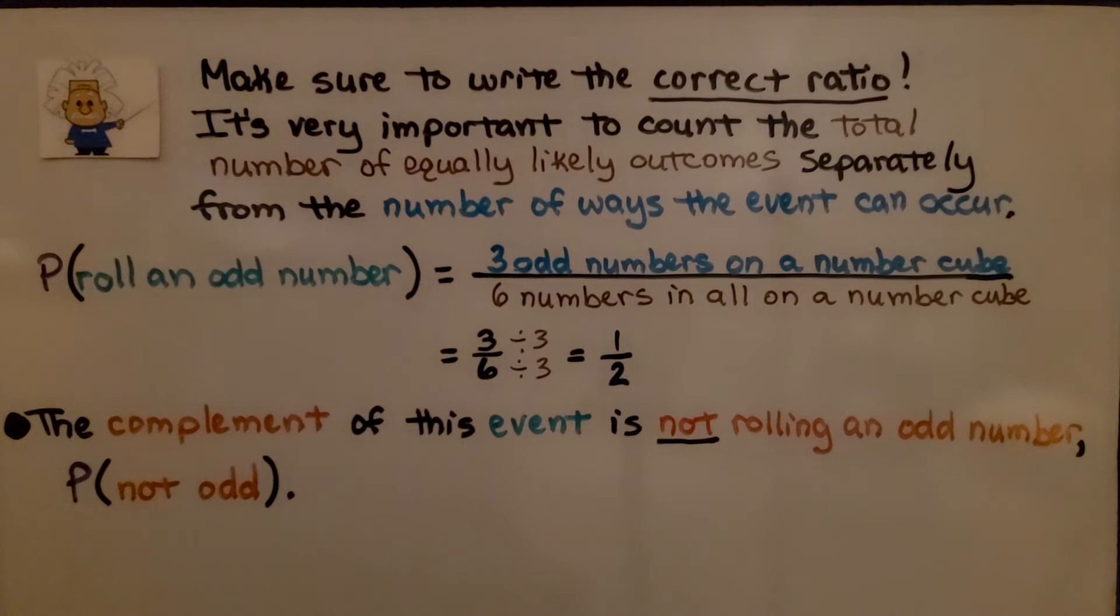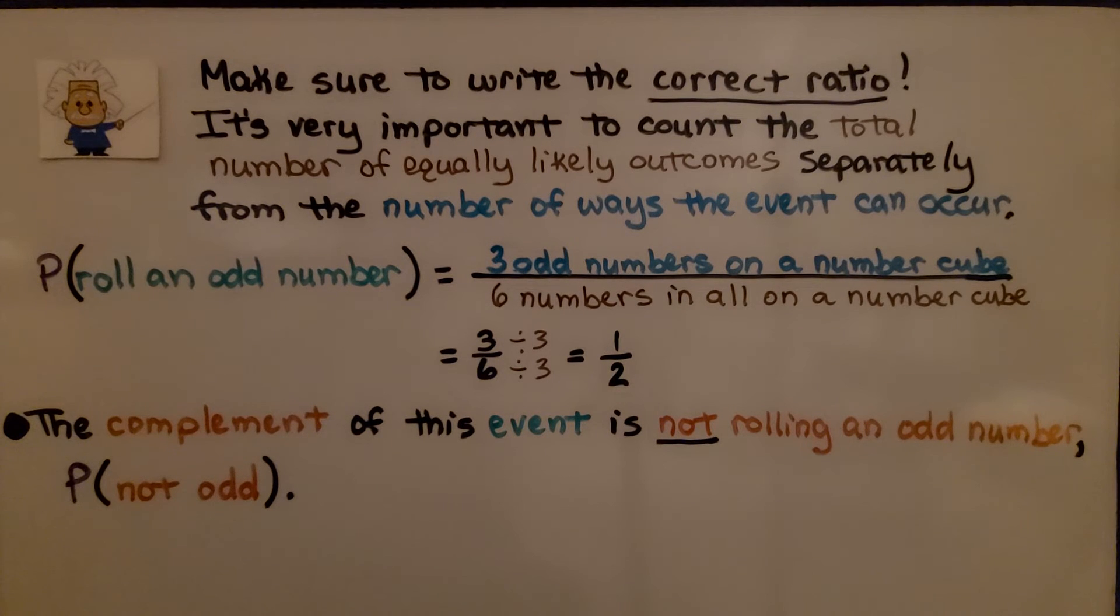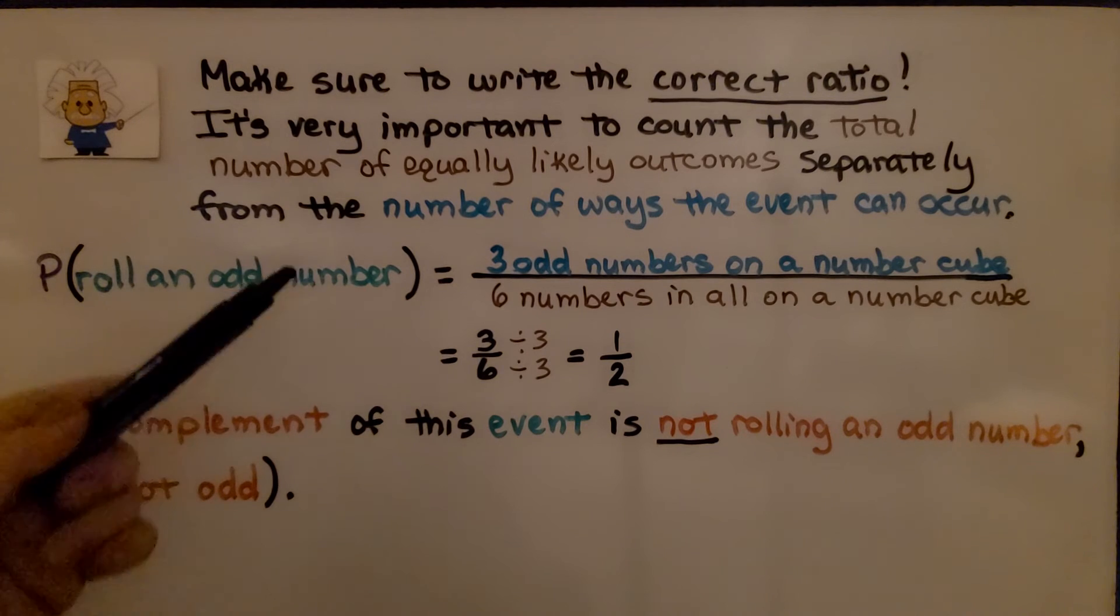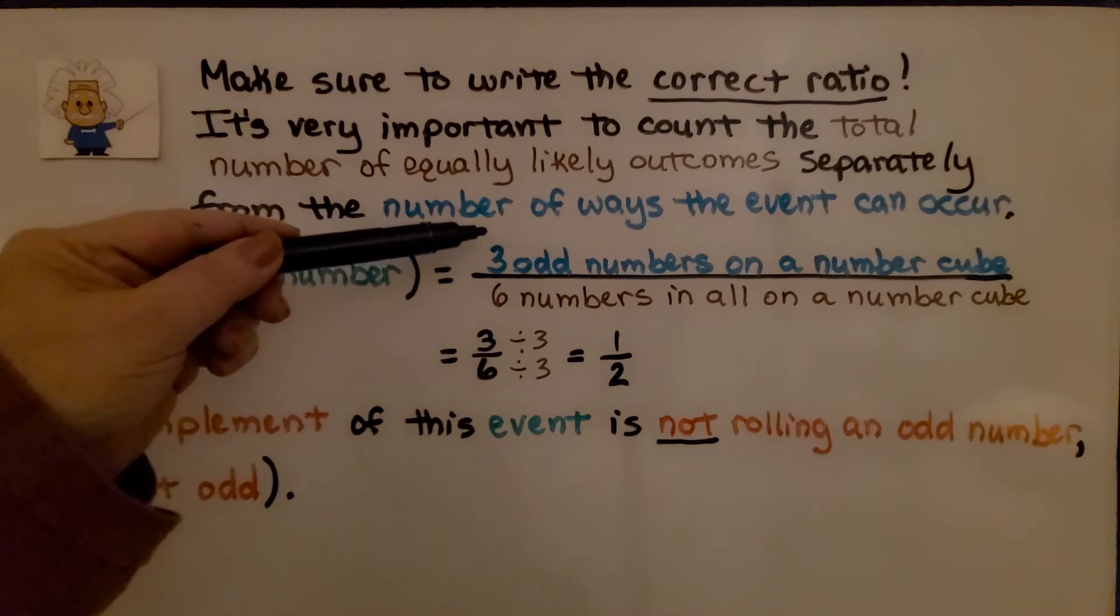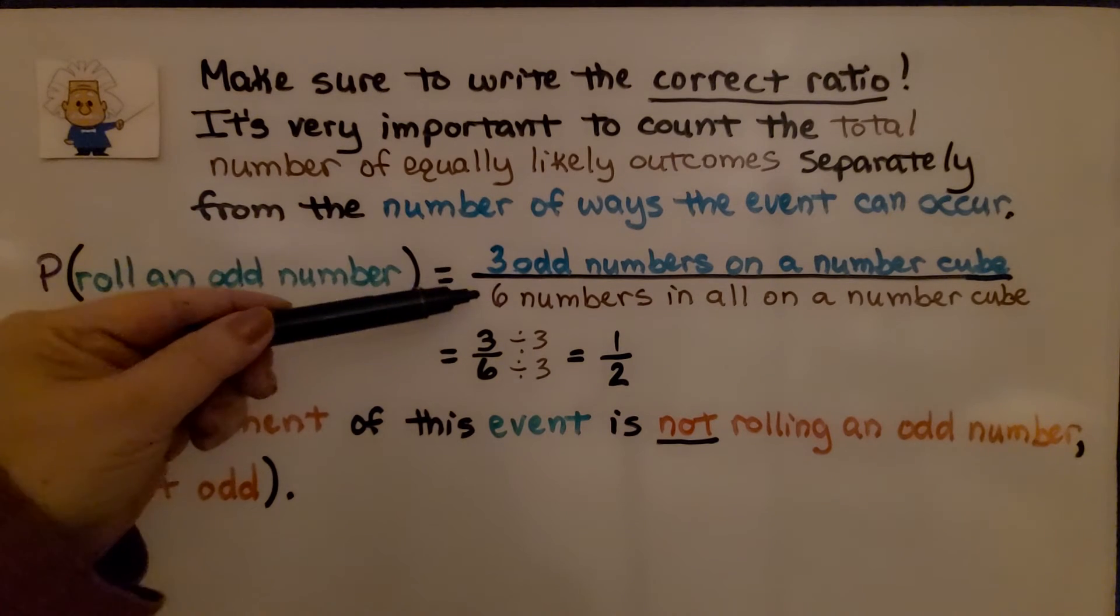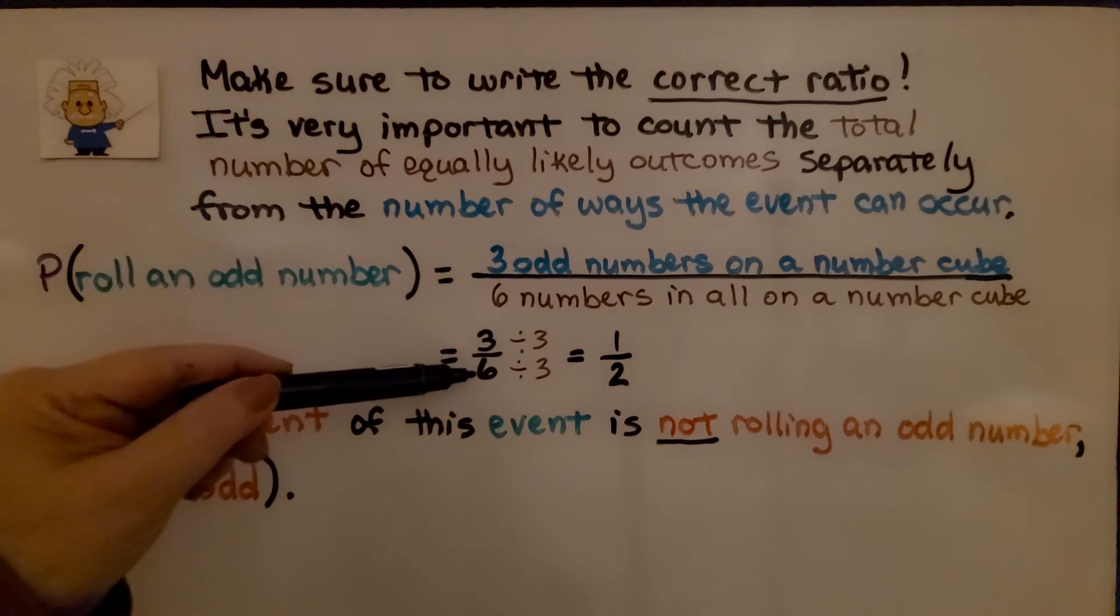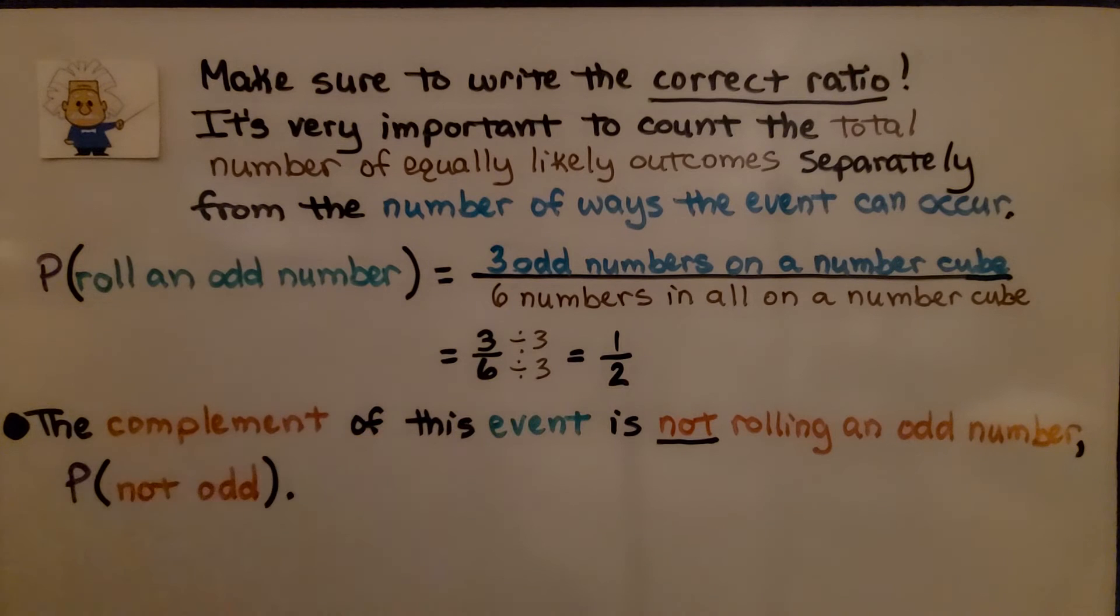Make sure to write the correct ratio. It's very important to count the total number of equally likely outcomes separately from the number of ways the event can occur. So the probability to roll an odd number is there's three odd numbers on the number cube, six numbers in all on the number cube as three-sixths, and we can simplify it to one-half.